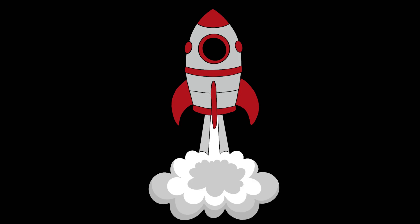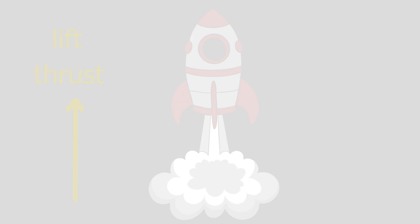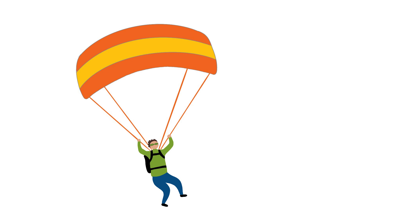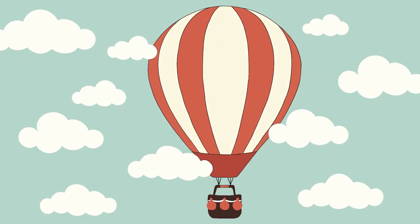Sometimes two of the forces may be the same thing. For example, a rocket engine pushes a rocket straight up, providing both lift and thrust. A parachute could be caught in an updraft, and then the drag force could also provide lift. Not all forces need to be present either. If there is no wind, a hot air balloon would not have any thrust acting upon it — only lift, drag, and weight.